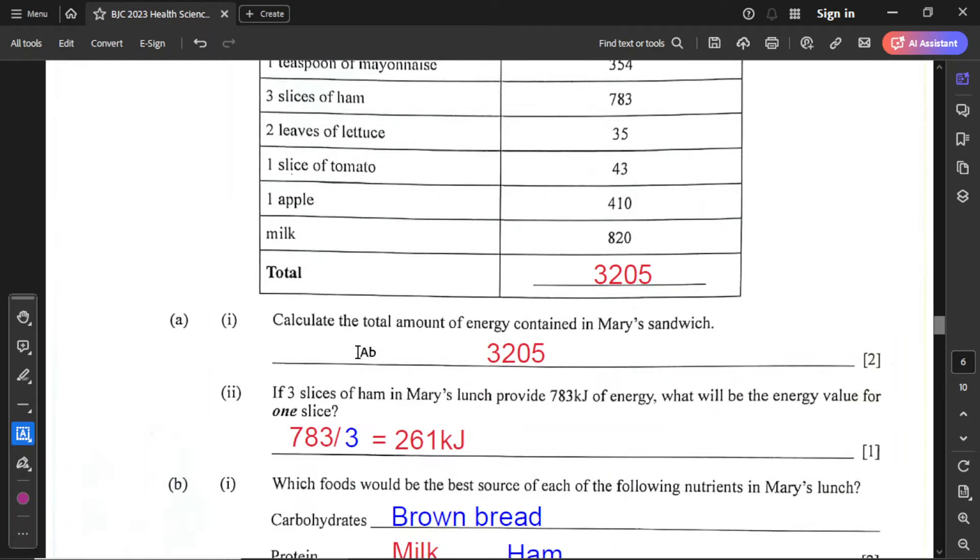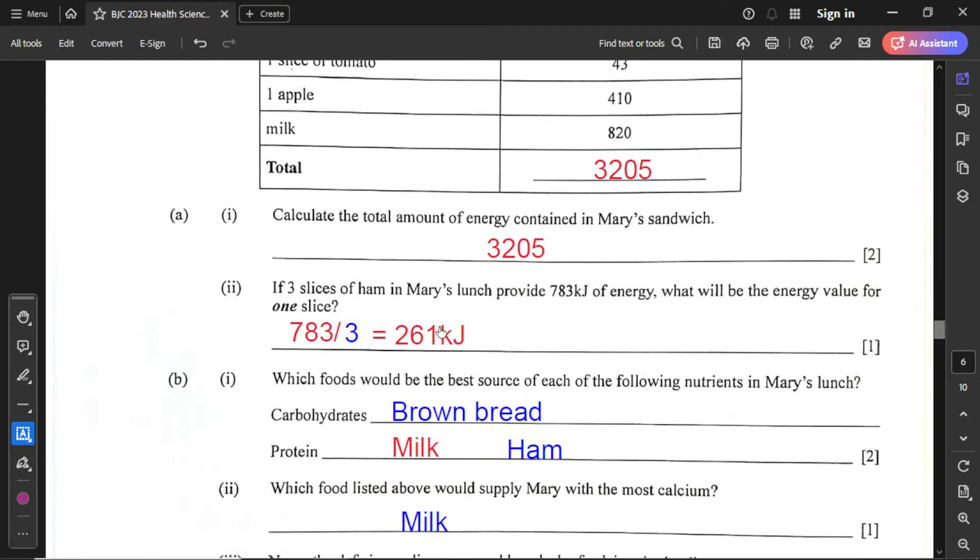For part A1, calculate the total energy. Once you add up everything, you get 3,205 kilojoules of energy in total. For part A2, if three slices of ham provides 783 kilojoules of energy, what will be the energy value for one slice? Divide 783 by 3, and you get 261 kilojoules of energy.